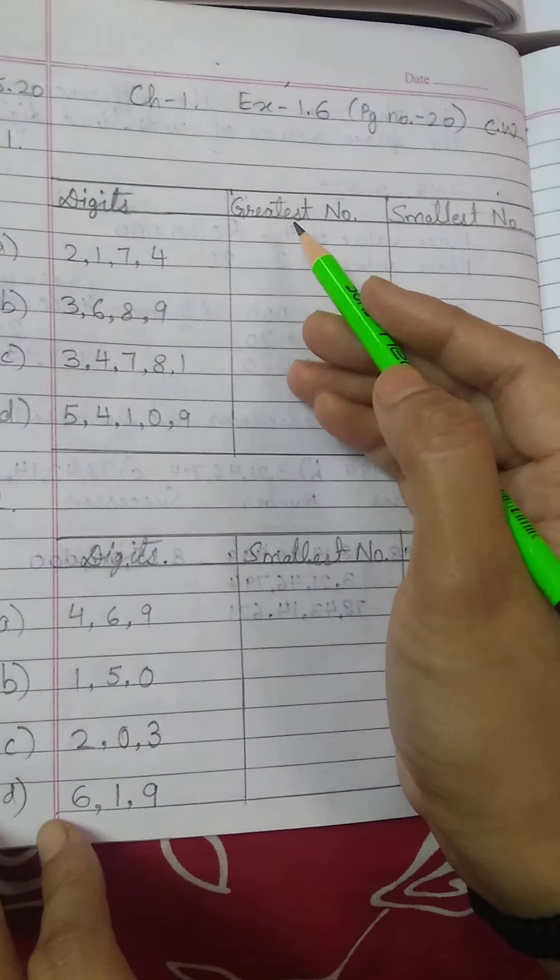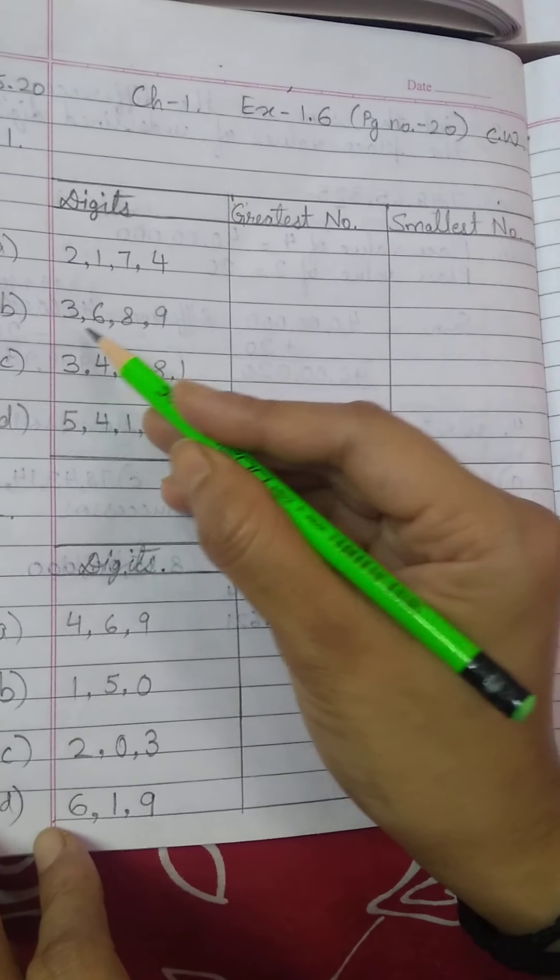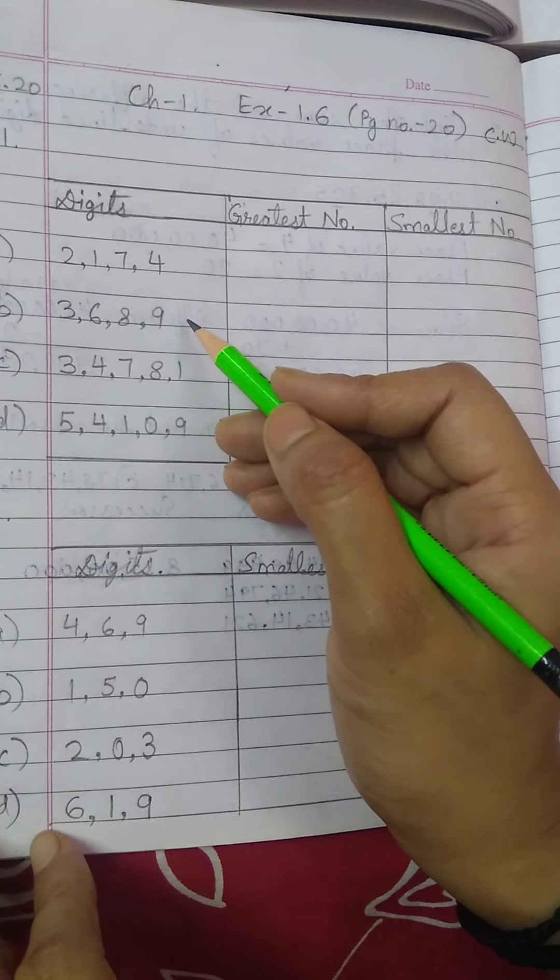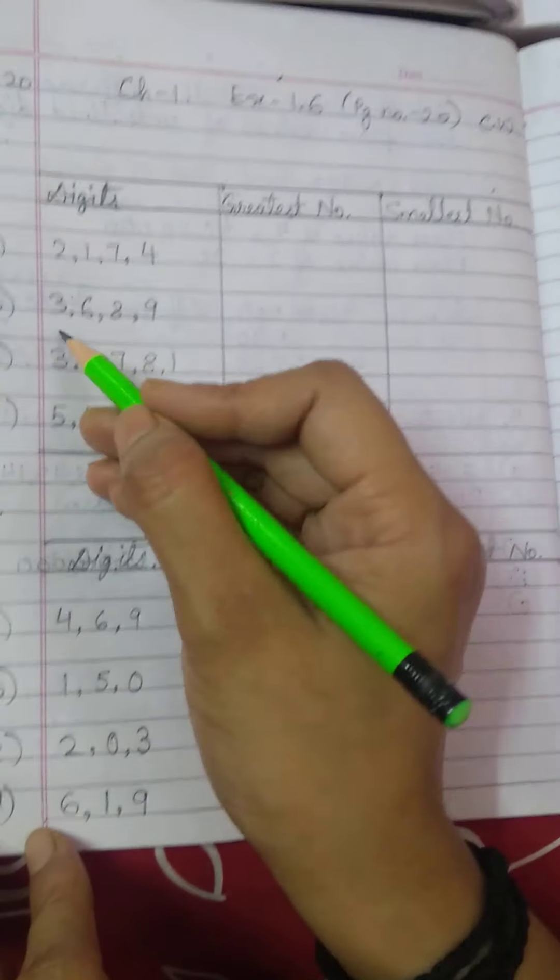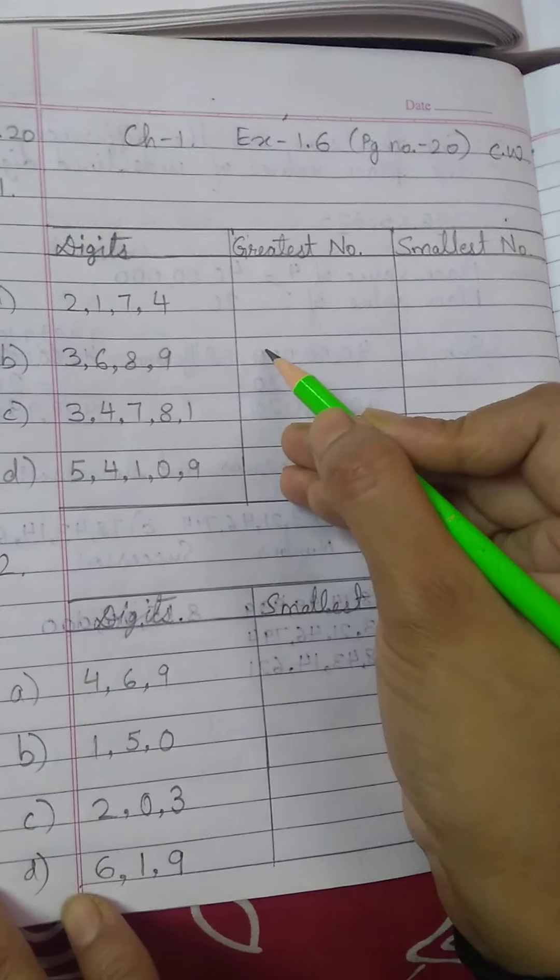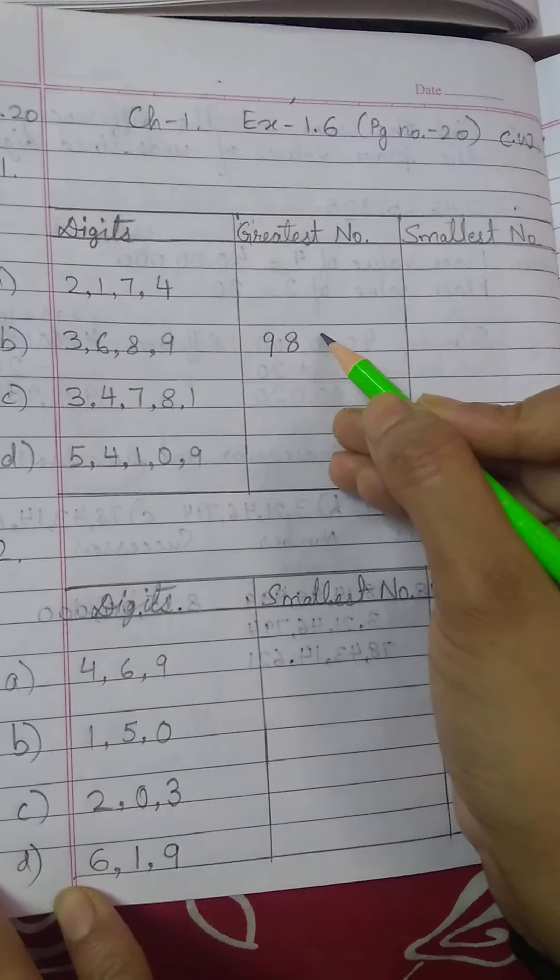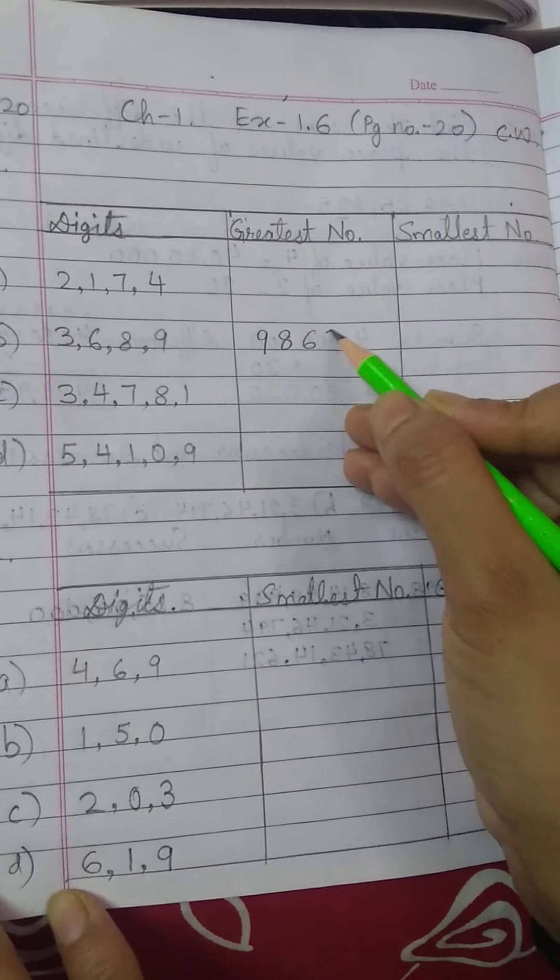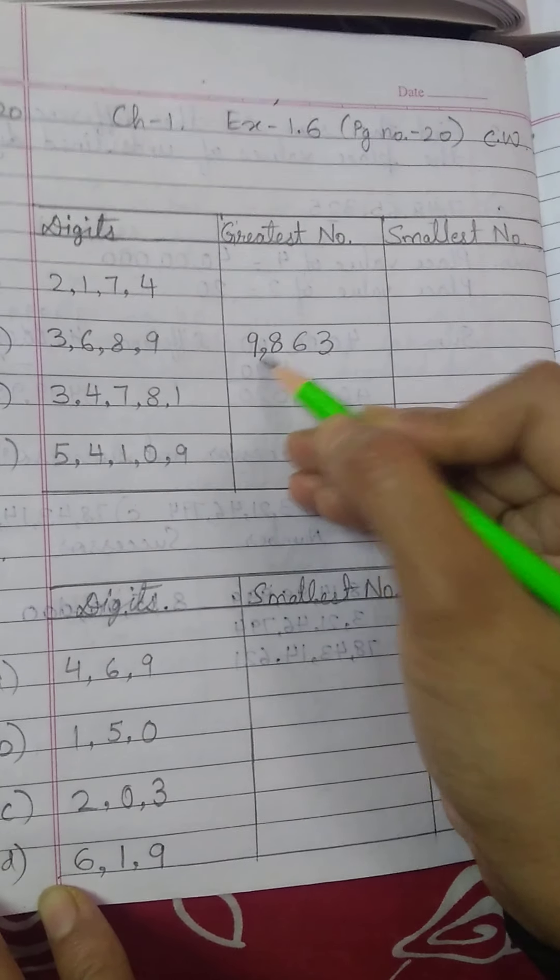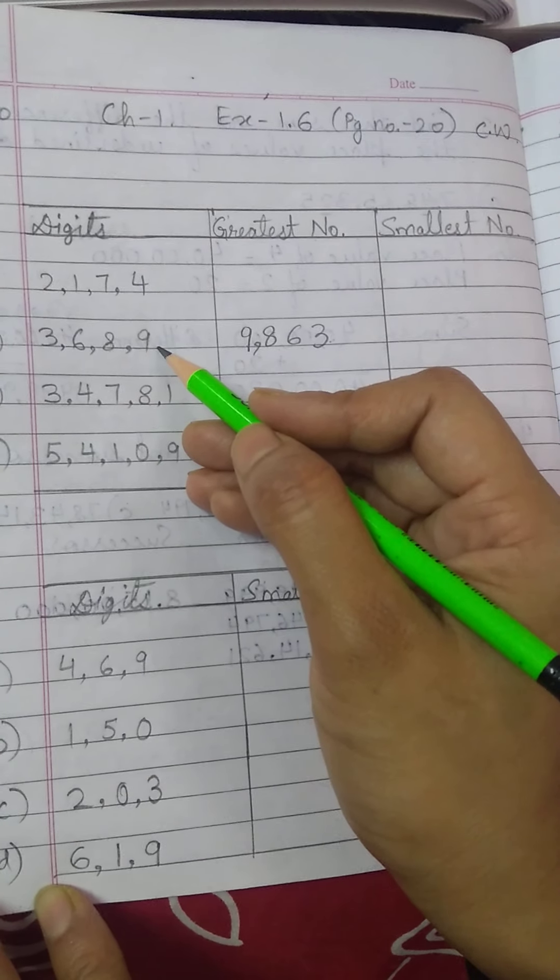Students, the rule is, whenever you are writing the greatest number, that means biggest number, then you will write the given digits in descending order. You know, descending order, decreasing order, bigger to smaller. So, we will write the digits bigger to smaller, which is the biggest among these 9. So, 9, then 8, 6, 3. So, we have written in descending order. Put the comma, 1 stands 100, comma. So, 9,863 is the greatest number, which is formed using these given digits.